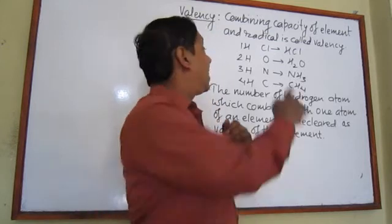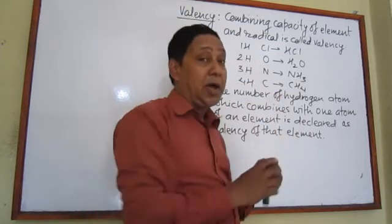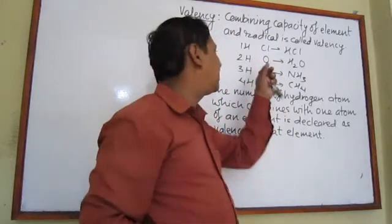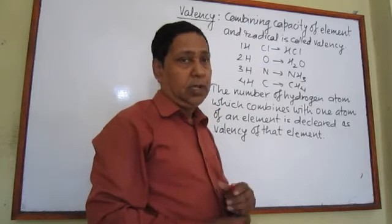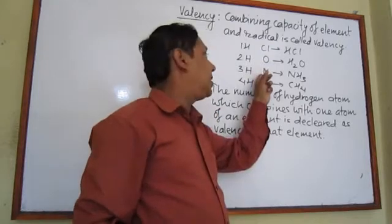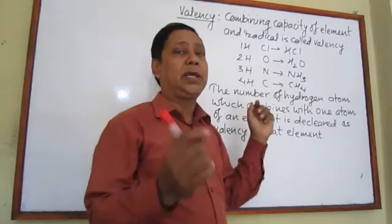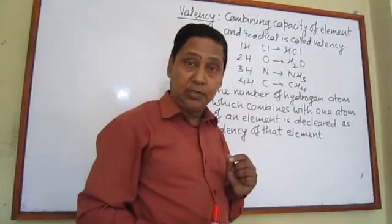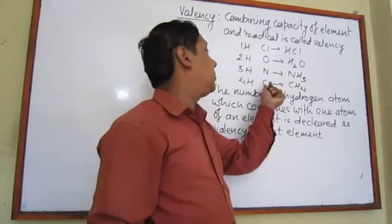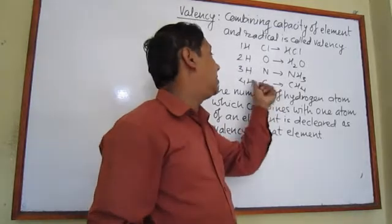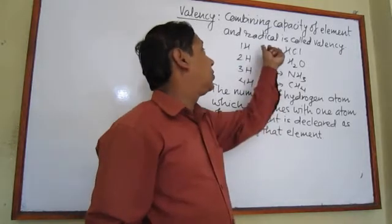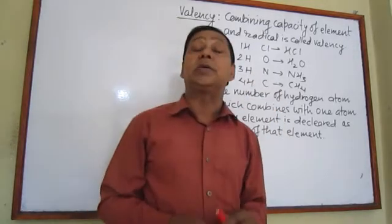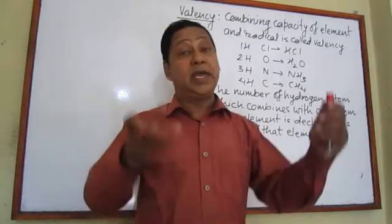In this example, the valency of oxygen is two, because one atom of oxygen combines with two atoms of hydrogen. One oxygen atom never combines with just one atom of hydrogen — we cannot change this ratio. The valency of nitrogen is three because one atom of nitrogen always combines with three atoms of hydrogen.